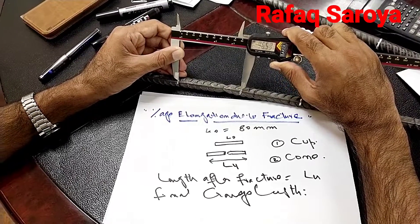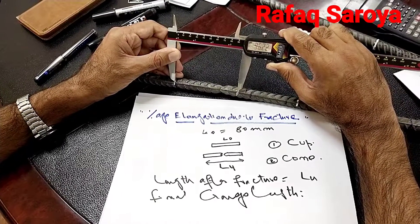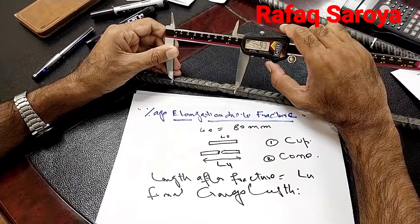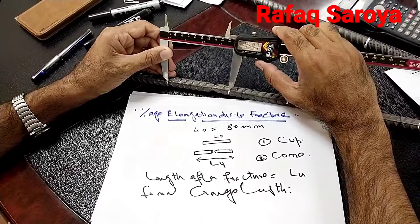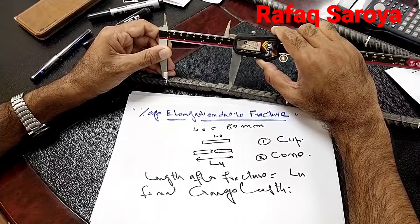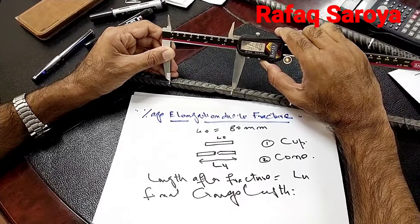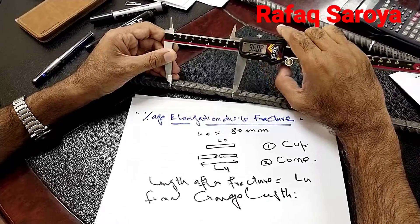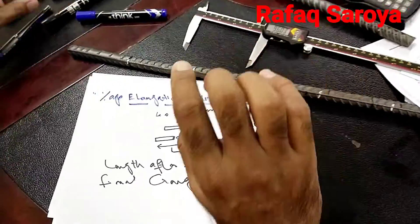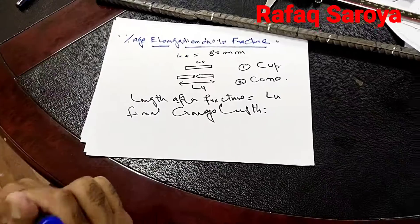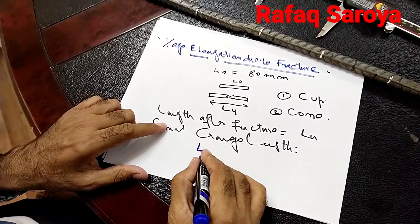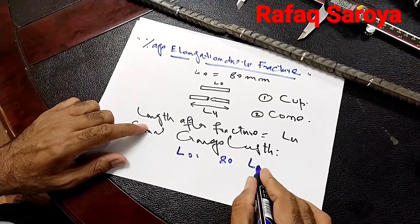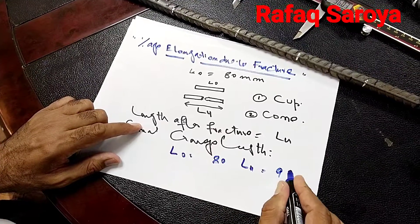This length comes out to be equal to nearly 96. Let me fix it accurately — it is 96. This means my initial length L0 is equal to 80 mm, and my final length LU is equal to 96 mm.